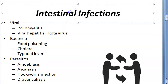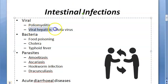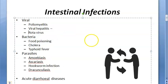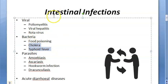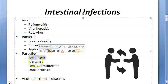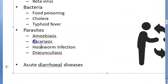Then you have intestinal infections, spread via the fecal-oral route. Viral examples include polio, rotavirus, and viral hepatitis. Bacterial examples include staphylococcus food poisoning, cholera, and typhoid — food and water-borne diseases. Parasitic examples include amoebasis, Entamoeba histolytica (a protozoa), Ascaris, and Dracunculiasis (helminths).